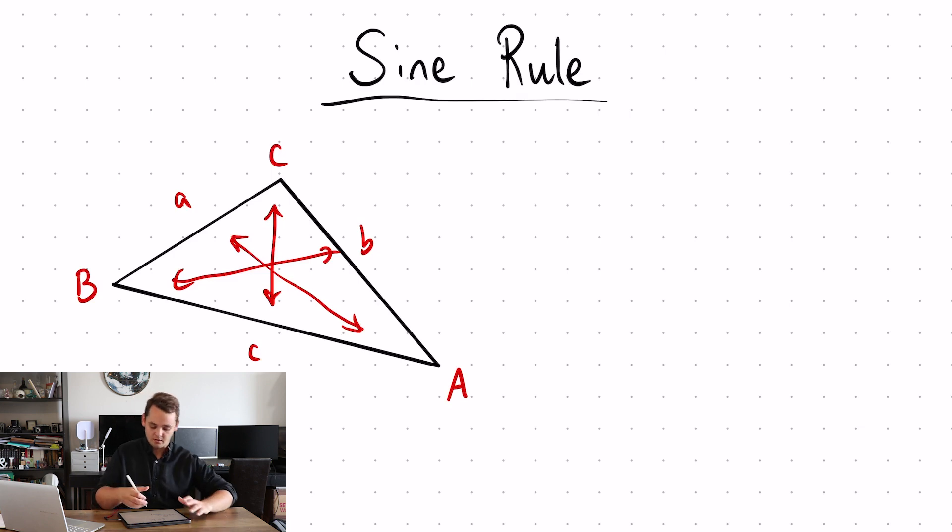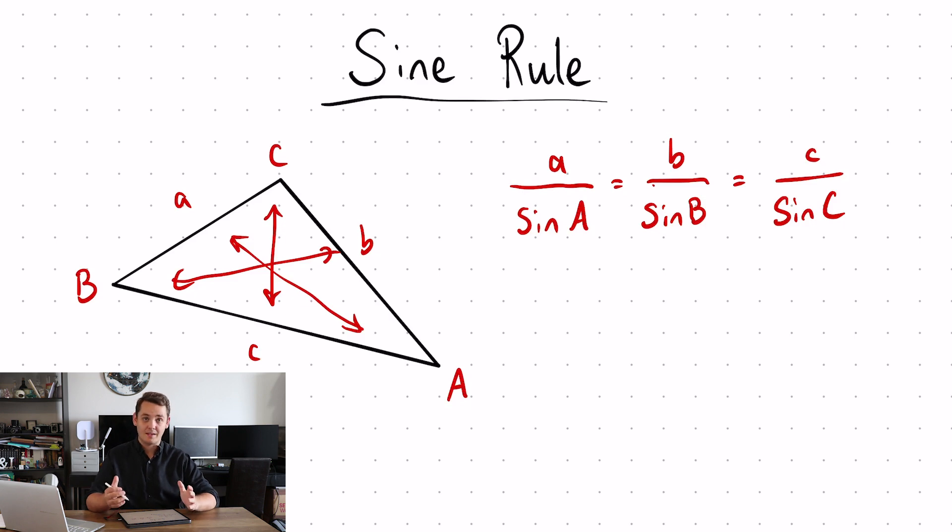The sine rule is written as a over sine A is equal to b over sine B which is also equal to c over sine C. All that means is a side divided by sine of the opposite angle will give you the same answer as one of the other sides divided by sine of that opposite angle.